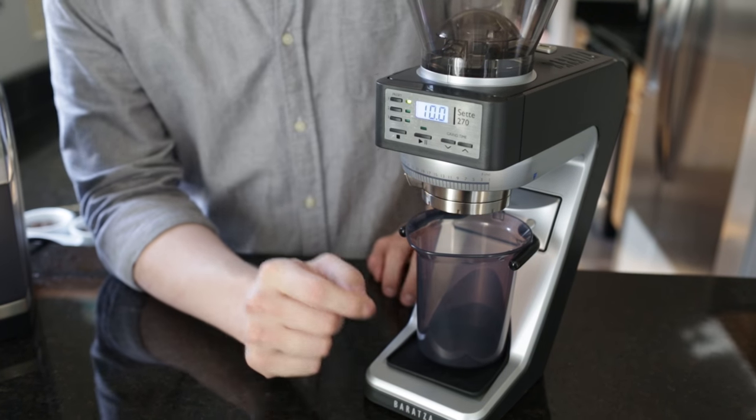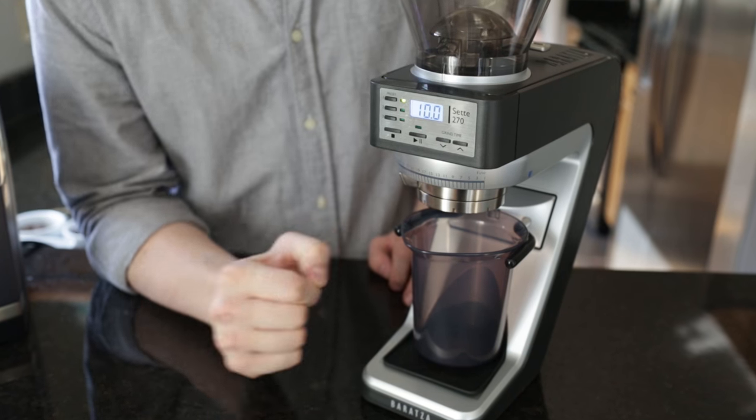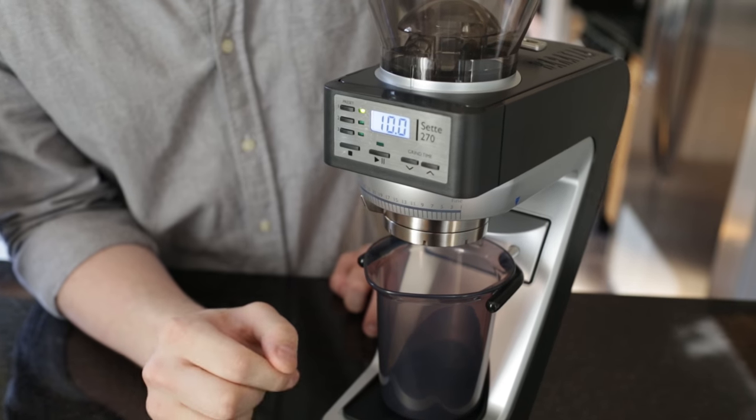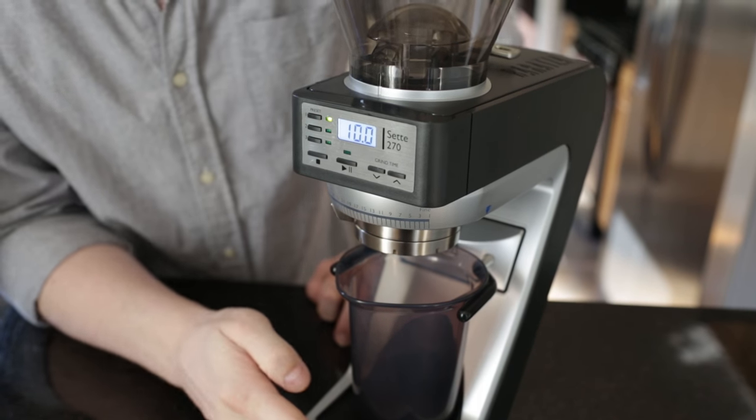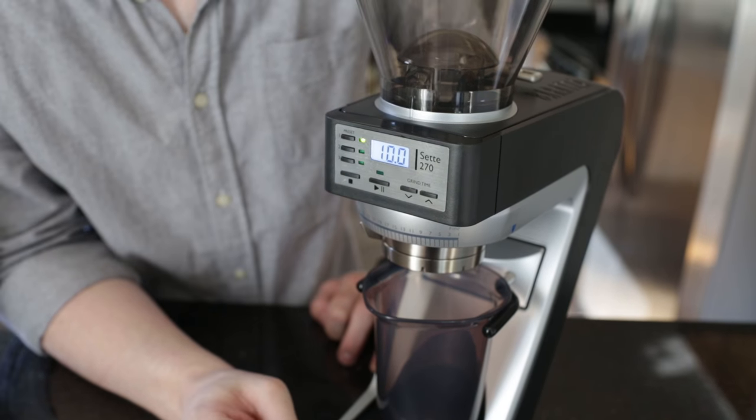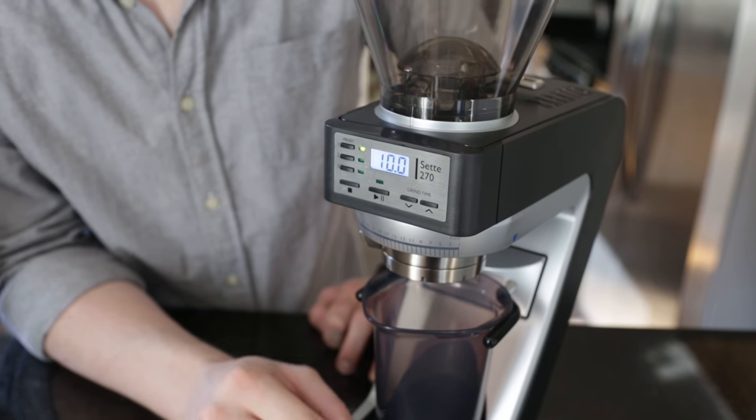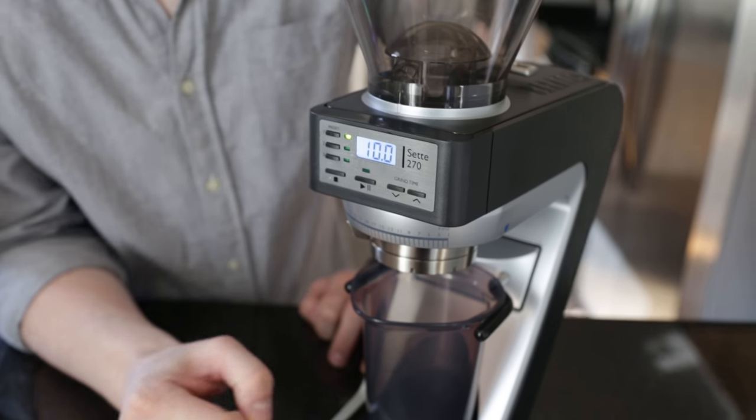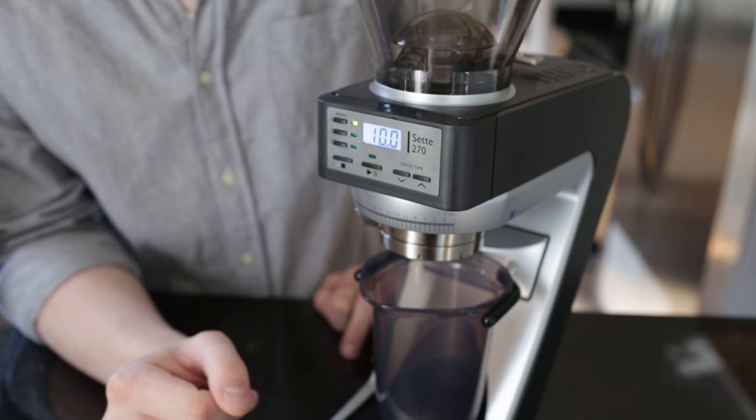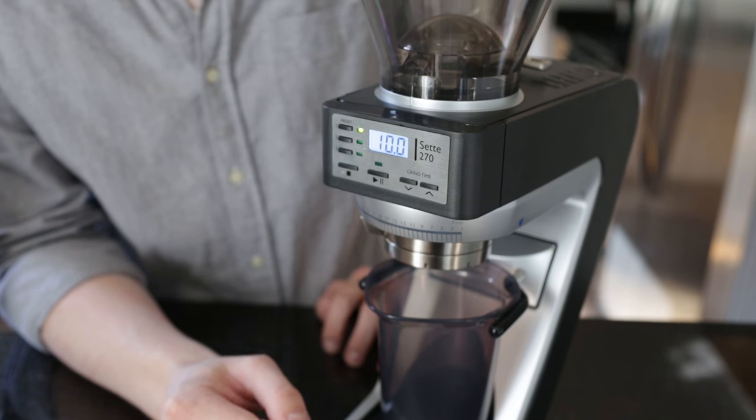Grind speed, however, is fantastically fast. We have seen up to and even over 7 grams per second at coarser settings. And for espresso, it wouldn't surprise us to see about 5 grams per second coming out of this grinder, even in a very fine setting. Your results might vary, of course, based on the coffee that you're using and the grind setting that you're using.